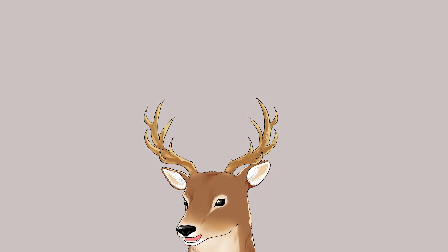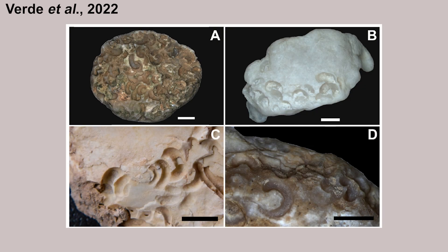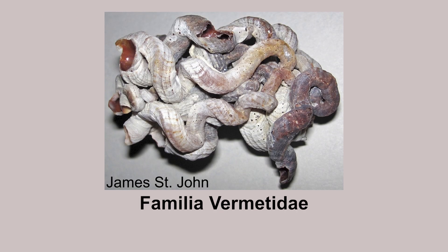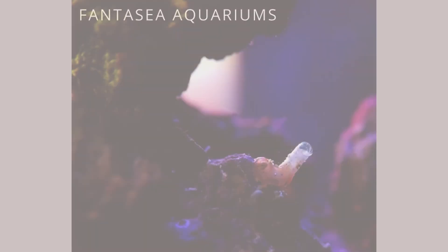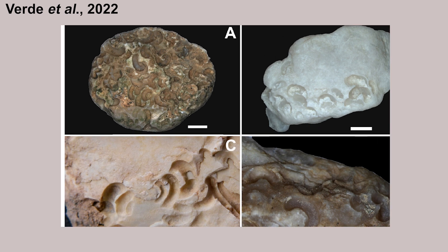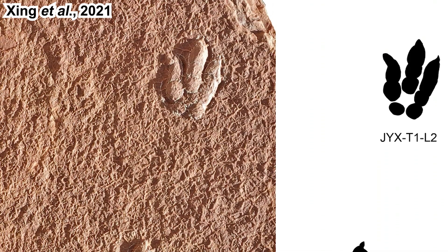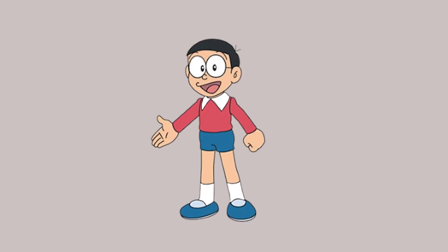Let me show you some examples of ichnotaxon. You could find a paper discussing the discovery of an ichnotaxon for the bioerosion by fermetit anchoring from 2022, classified as the ichnogenus Renignus. It's basically a rock eroded by organism activity — what bioerosion is — caused by fermetit, an animal called worm snail, which anchors itself to a rock and causes these marks. Another example is the discovery of theropod tracks in China, published in 2021. The tracks were identified as a new ichno species named Eubrontes nobitai, named after Nobita from Doraemon.